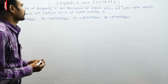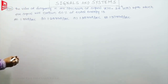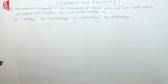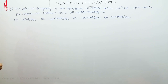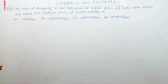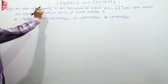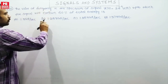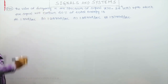Question number 40. The value of frequency in the spectrum of signal x(t) = 2·e^(-t)·u(t), up to which the signal will contain 60% of total energy. So 60% of total energy is being asked — what is the value of frequency, that is omega?